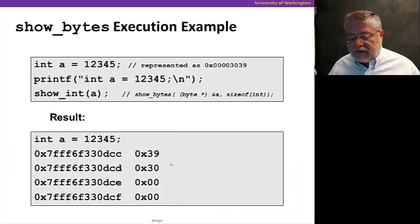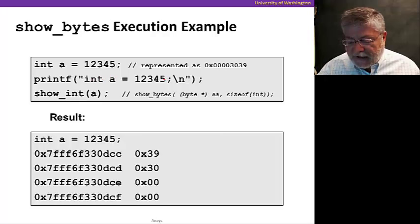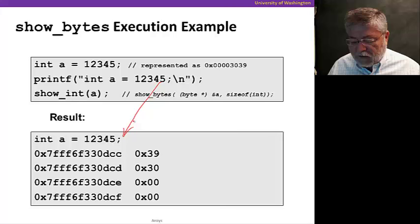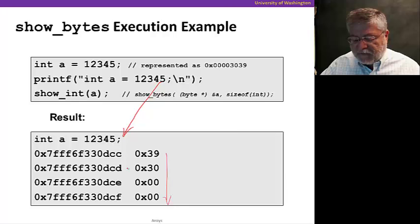Let's take a look at some sample executions of this function. Here we see the integer 12345 being placed in a. And when we call, we'll first print out that statement and then call the function show_int. So here's that first print statement directly from above that prints out the value. And then you'll see that inside of show_int, we've called show_bytes. And it went for four bytes, printing out each one in turn, successive bytes at cc, cd, ce and cf. And the rest of that address is pretty arbitrary. It's just where that integer a happened to be.